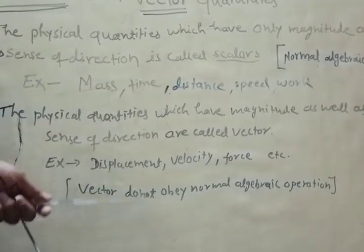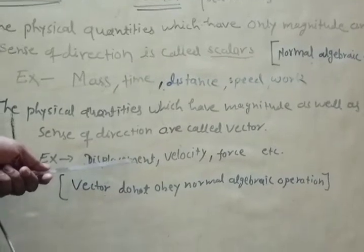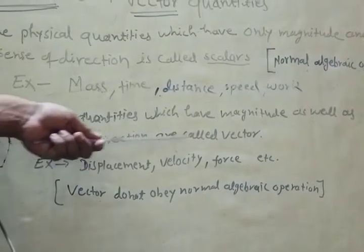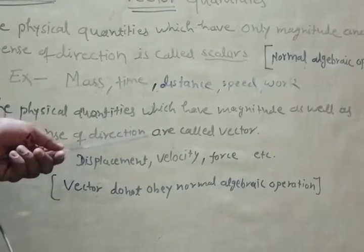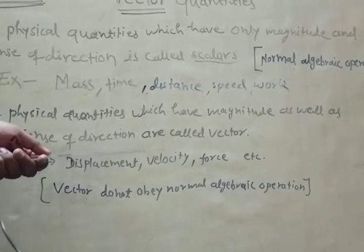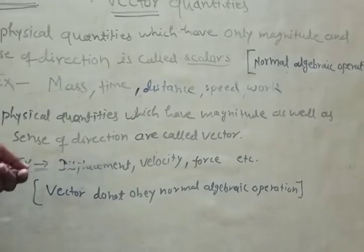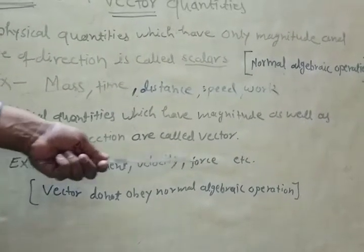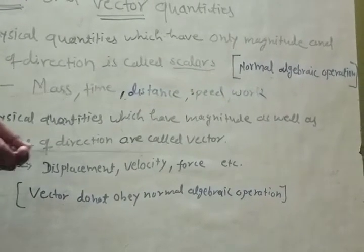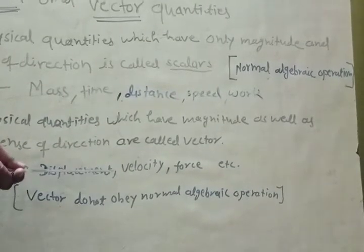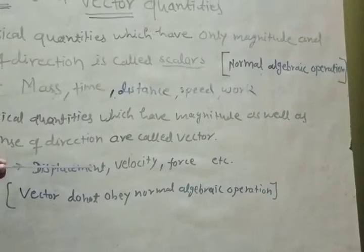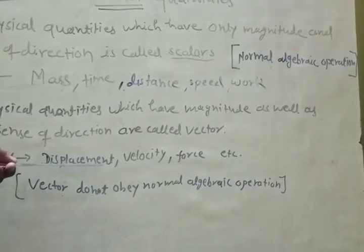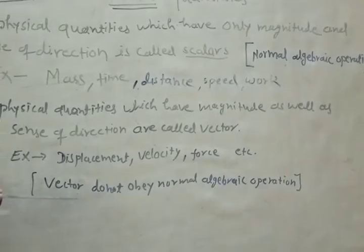Example: displacement, velocity, force. Displacement has direction. We need to indicate which direction the object is moving. If the object is moving in the opposite direction, then it becomes minus. With displacement, we need to tell in which direction the object is moving. Same with velocity and force - in which direction is the force applied?